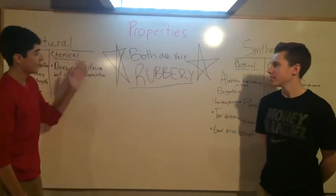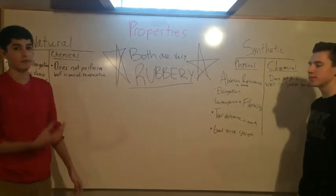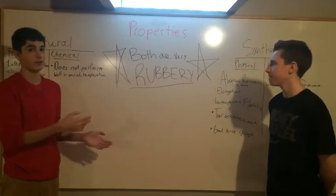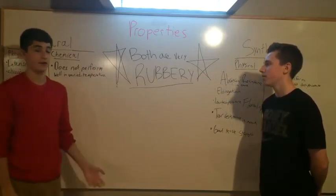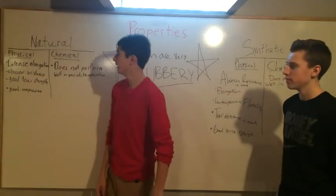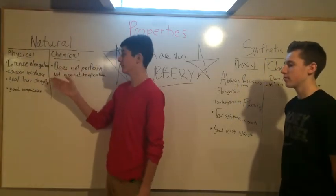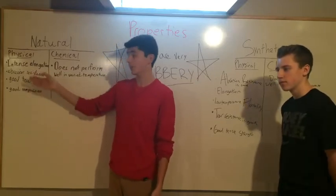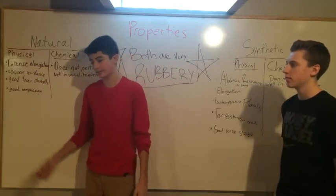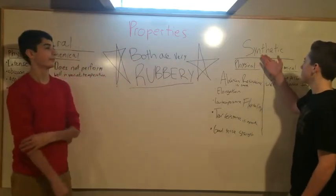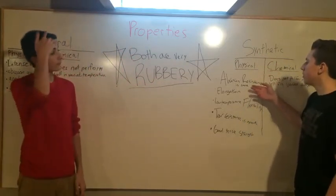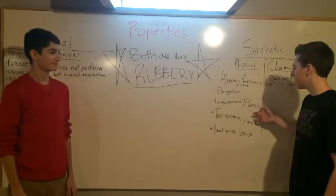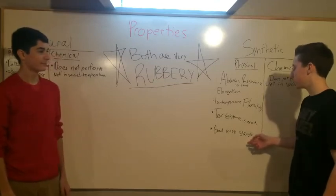And both are covalent. Both natural rubber and synthetic rubber share a lot of the same properties because they are both very similar compounds, except synthetic is a little bit stronger because it's been made by humans and altered to fit our taste. Some physical properties of natural rubber are intense elongation — the hyper-elasticity mentioned earlier — abrasion resistance, good tear strength, and good compression. The synthetic physical properties include good abrasion resistance, elongation, low temperature flexibility, good tear resistance, and good tensile strength.